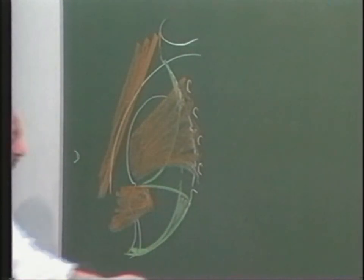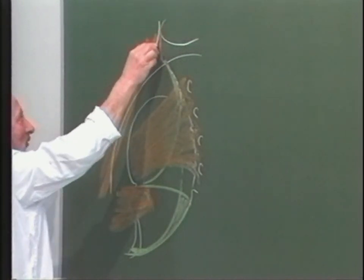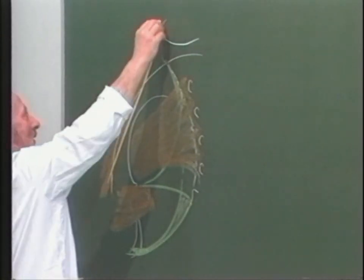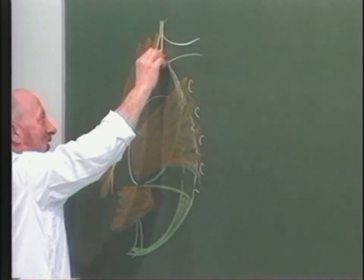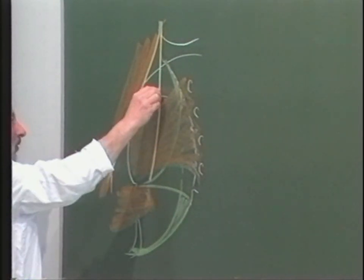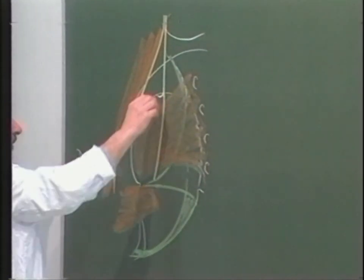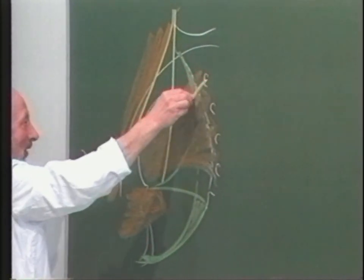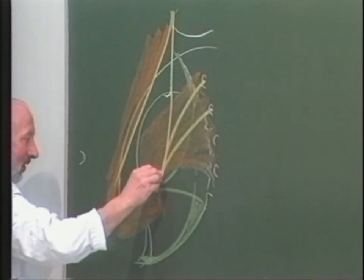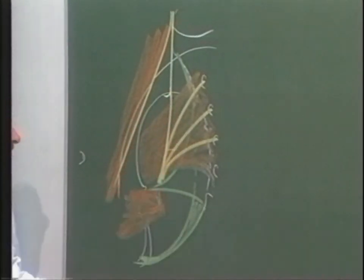Ces structures vont être en rapport avec les formations nerveuses. Sur le bord médial du psoas : le trajet du nerf obturateur, plus en dedans le trajet du tronc lombosacré, qui va, à la plante de la grande échancure sciatique, abandonner le nerf glutéal supérieur, et qui, rejoint maintenant par les racines S1, S2 et S3, va donner naissance au grand nerf ischiatique.